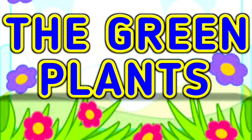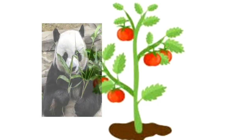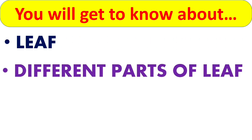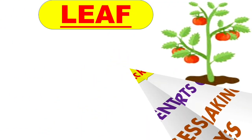Hello everyone, this is Neha here and welcome back to Aditya Kids Education. Today we are going to start with our new topic, that is green plants. You all know that plants are very important to us. They make their own food and provide food for animals and human beings. So children, in this video you will get to know about the leaf, different parts of the leaf, and the process of making food by leaves. So we will start with the leaf.